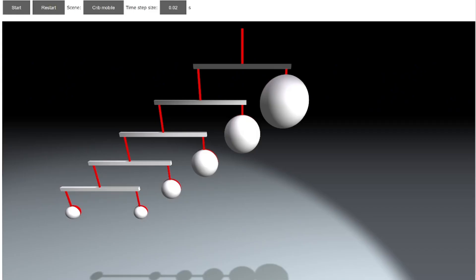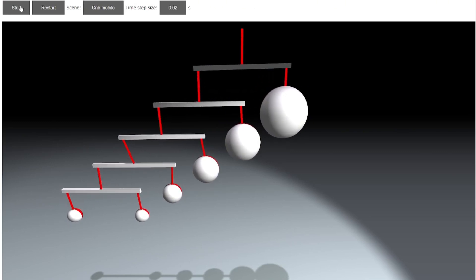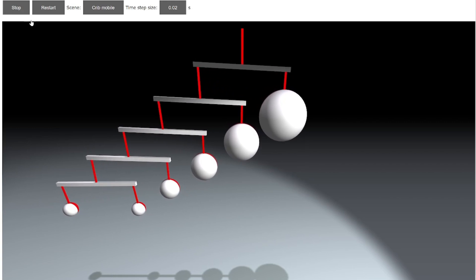Here you see the JavaScript rigid body engine in action. This simulation of a grid mobile shows two basic features we will discuss today.